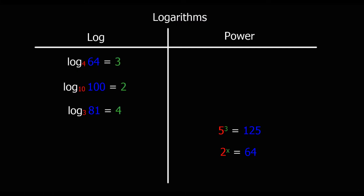On the left here we've got some equations written in log form and on the right we're going to write them in power form, so we're just going to get used to converting between these two forms. This 4 here is the base — I've colour coded it red — so 4 is going to be the base over here. 3 is the power, so it's 4 to the power of 3, and that equals 64. So log base 4 of 64 equals 3 is equivalent to 4 cubed equals 64.